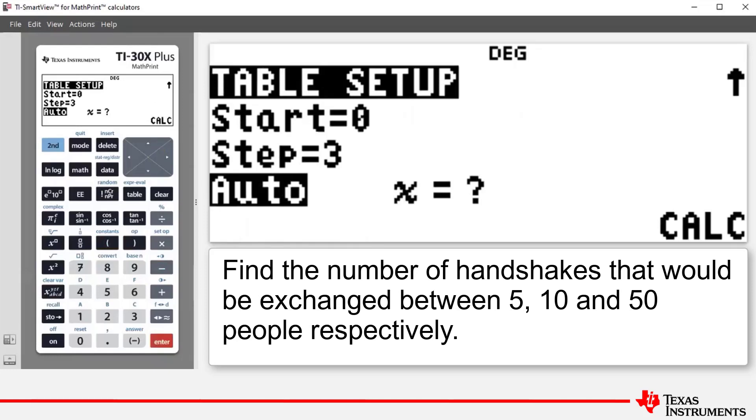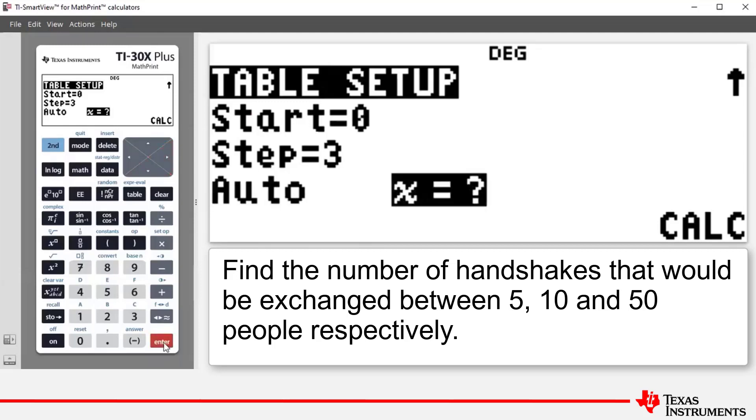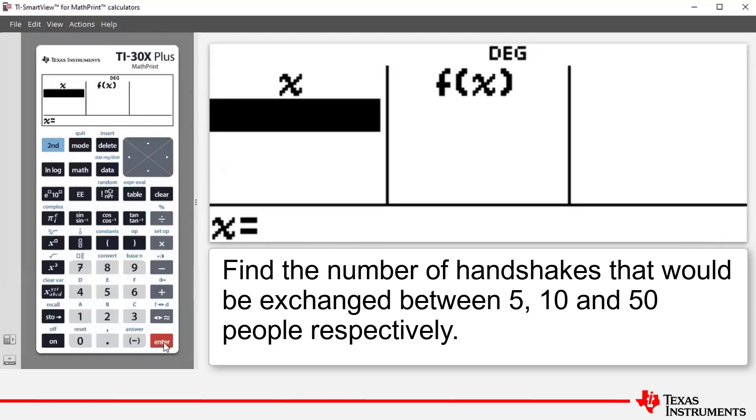Now this time we don't want to have our table expressed in auto form, we want to access our Ask X feature. So what we do is we use our arrow key down to highlight auto, then go one to the right to highlight our Ask X feature and press enter. Now we press enter again and it takes us to a blank table.